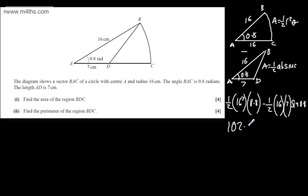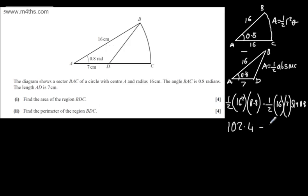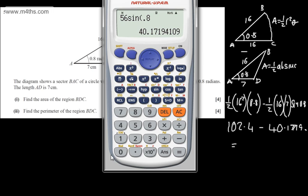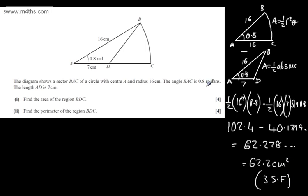So 102.4 minus: we've got ½ × 16, which is 8, times by 7, which is 56. So 56 × sin(0.8) gives me 40.1719... So 102.4 minus the result gives 62.228... Therefore, I'm going to write this as 62.2 centimetres squared, given to three significant figures. That's the first part of the question done for four marks.